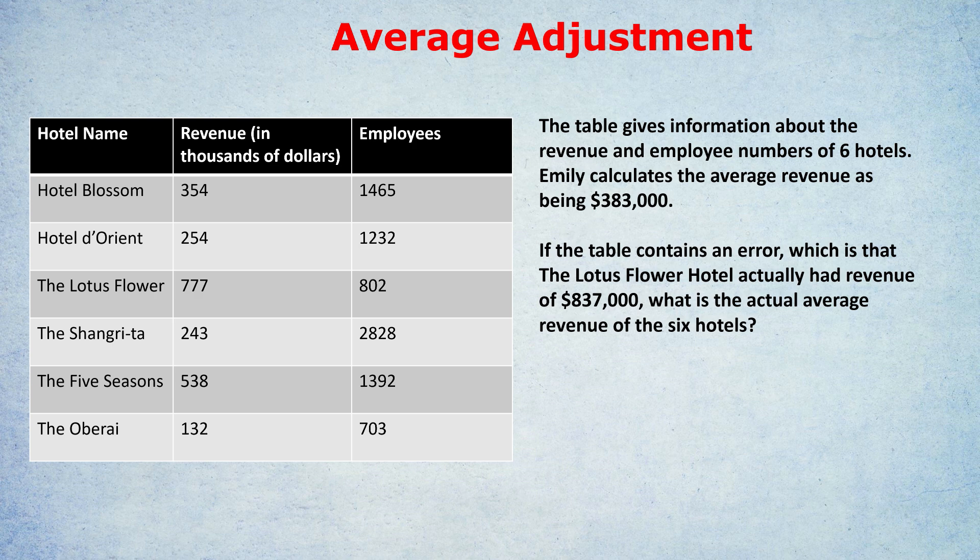What topic is this? Average adjustment. In other words, they will tell you an average that they've calculated, then they'll tell you there's an error or there's some part of the calculation you need to change. And what 9 out of 10 students do — and you can admit it if it was you — is recalculate the average by adding up all the terms and then dividing by the total. But I bring some good news: you don't need to do that.